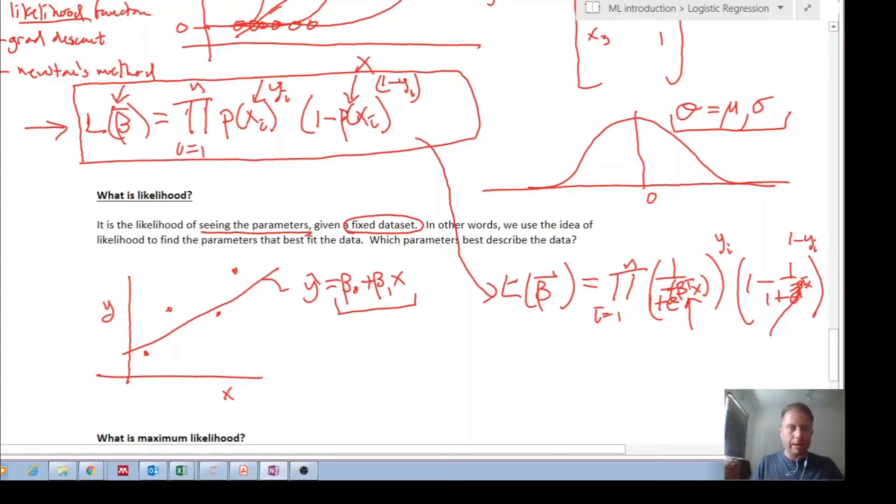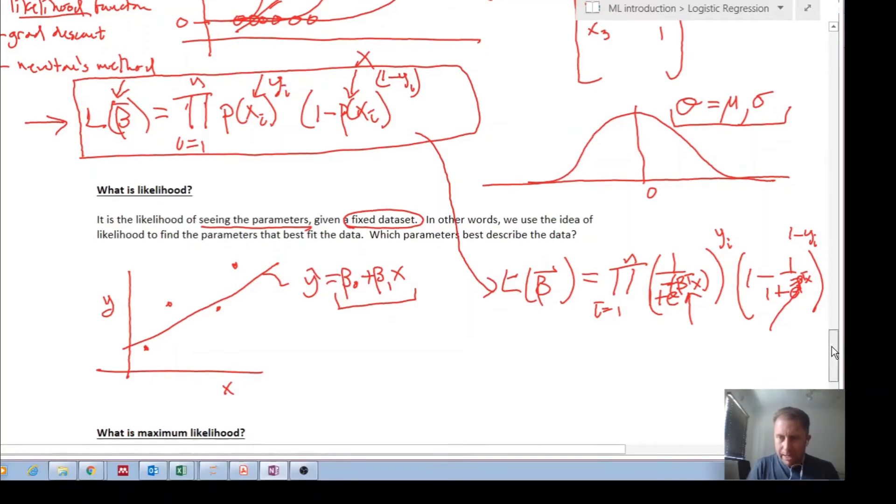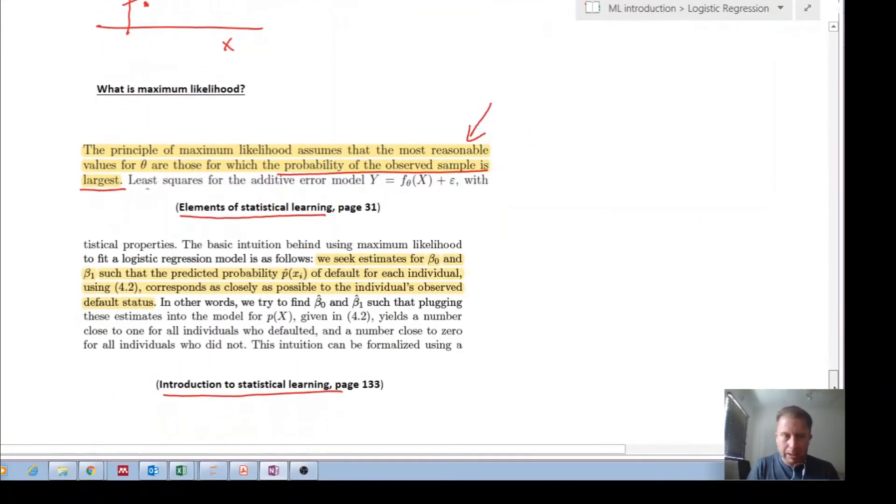Keep varying them. And you calculate your likelihood and you vary it. You calculate the likelihood and you vary it. And you keep varying your beta parameters. And then the aim is to find the maximum likelihood.